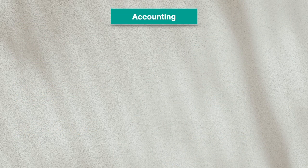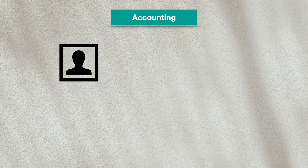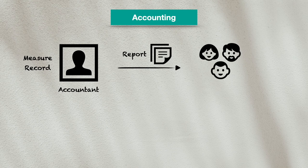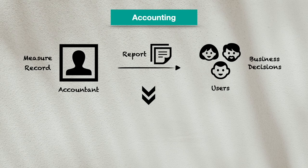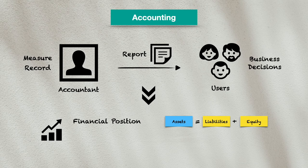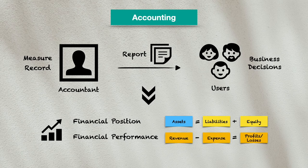Let's first recap what accounting is all about. Accounting involves the accountant measuring and recording business transactions and then prepares reports for stakeholders so that they can make informed business decisions. The report will contain information relevant to the financial health of the business, including the financial position — showing assets and the claims on those assets, which are liabilities and equity — as well as the financial performance, showing revenues generated, expenses incurred, and corresponding profits or losses.